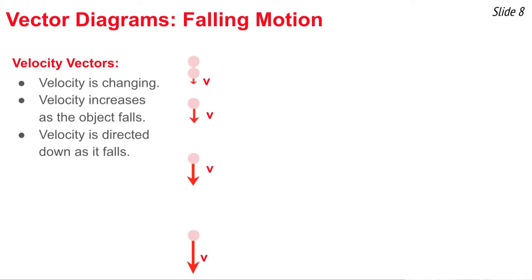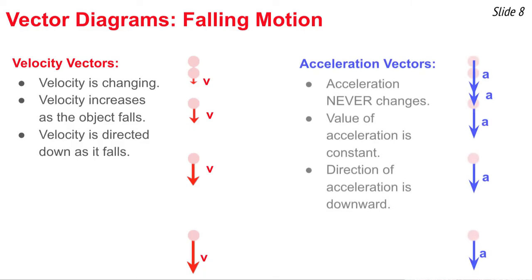Now let's look at vector diagrams — velocity vector diagrams and acceleration vector diagrams. For strictly falling motion, the velocity vector arrows increase in size over time and always point downwards, indicating that velocity is increasing and directed downwards at all points. The acceleration vectors are constant in size — because acceleration is constant — and also directed downwards at all points in time.